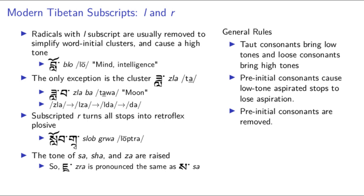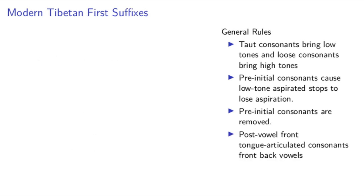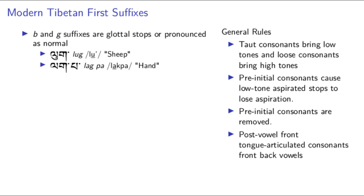That's the end of the subscripted consonants, and we only have two positions left. The suffixes behave a lot more normally with respect to the romanization, so we're through the hard part. We are now dealing with codas rather than onset clusters, so we have to add another two general rules: coda or post-vowel consonants undergo lenition, and post-vowel tongue-articulated front consonants front-back vowels. There are ten first suffixes, and for the most part they are either pronounced as normal or softened to glottal stops. We immediately see this with ba and ga.